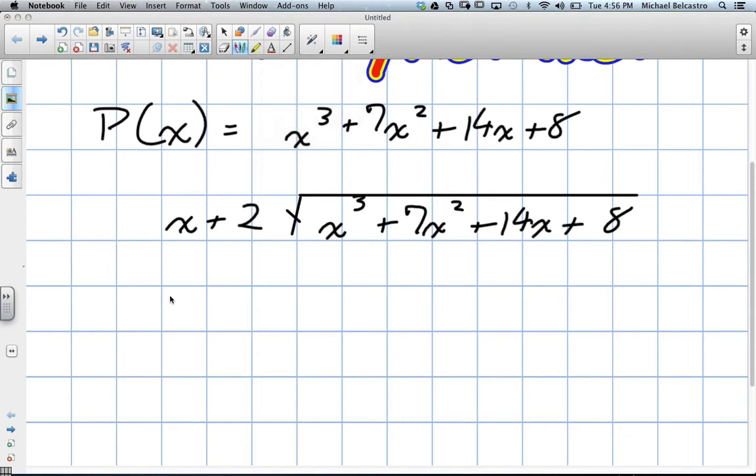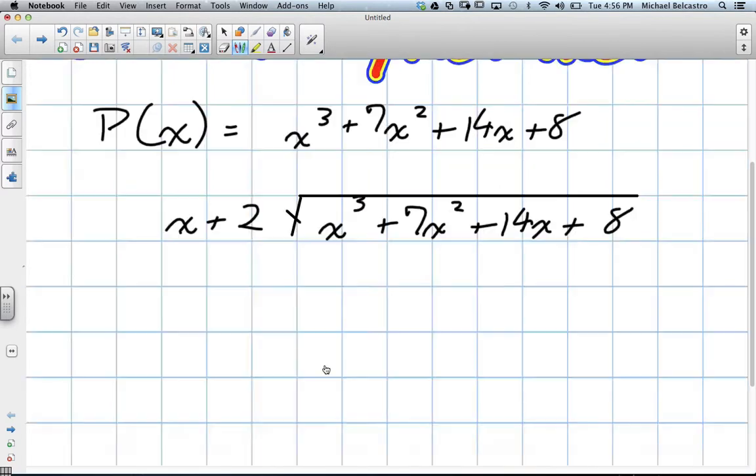When we're trying to eliminate, we look at our variable. If we have x to the power of 1 and we need to eliminate x cubed, what value do we multiply by so that when we subtract there'll be nothing left in this column? X squared. That's right.